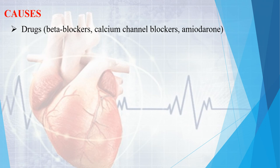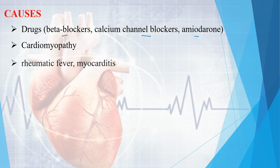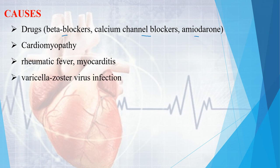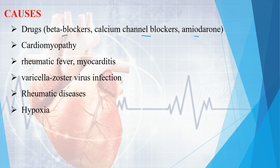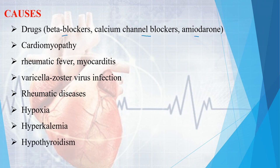The causes of Mobitz type 1 include drugs like beta blockers, calcium channel blockers, and amiodarone; cardiomyopathy; rheumatic heart fever or myocarditis; varicella or enterovirus infection; rheumatic disease; hypoxia; hyperkalemia; hypothyroidism; and inferior wall myocardial infarction.